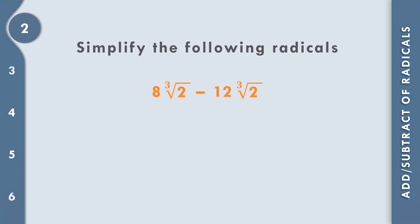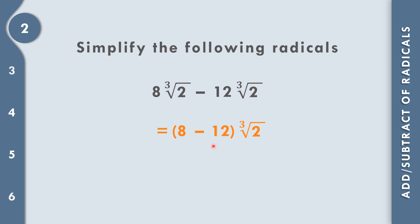In number 2, 8 cube root of 2 minus 12 cube root of 2. We have the same index and radical, so we combine: 8 minus 12, copying the sign of negative 12. 8 minus 12 equals negative 4, so the answer is negative 4 cube root of 2.